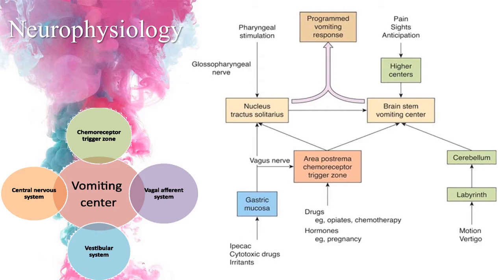Due to drugs like opiates and chemotherapy agents, and hormones such as in pregnancy, there is stimulation of the area postrema and CTZ, programming the vomiting response. Due to motion sickness and vertigo, the middle ear is involved, affecting the cerebellum and directly stimulating the brain stem vomiting center. Pain and anticipation directly affect the brain stem vomiting center. These are the neurophysiology pathways of vomiting.